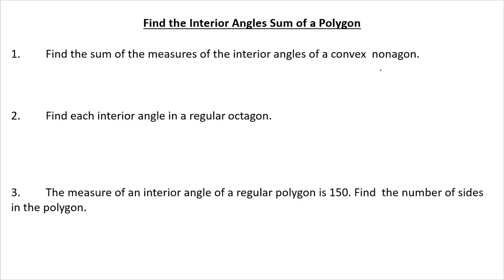Find the sum of the measures of the interior angles of a nonagon. A nonagon has 9 sides. So n equals 9. My formula is n minus 2 times 180. So I do 7 times 180, and that gets me 1260.